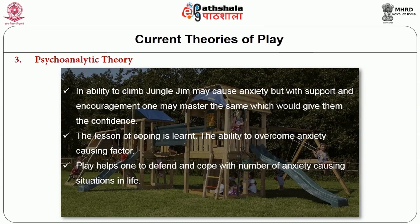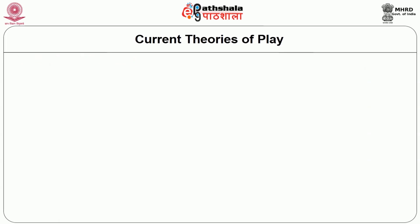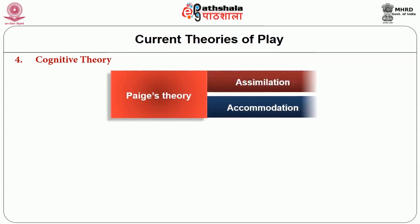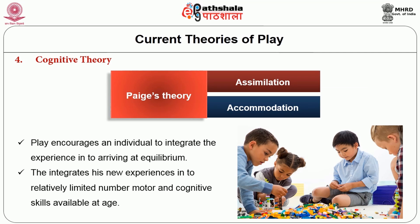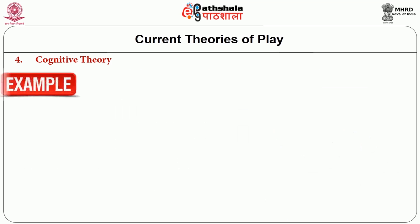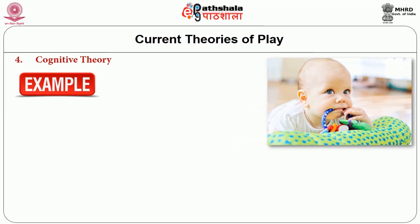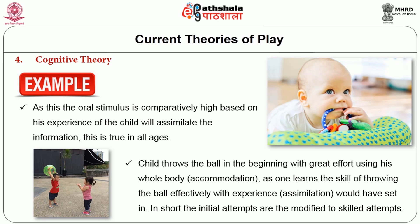Cognitive theory: The core of Piaget's theory is assimilation and accommodation. Play encourages an individual to integrate experience into arriving at equilibrium. One integrates new experiences into the relatively limited number of motor and cognitive skills available at a given age. During infancy, a baby puts everything into the mouth as the oral stimulus is comparatively high. Based on experience, the child will assimilate information, and this is true for all ages. A child throws a ball in the beginning with great effort, then learns the skill of throwing the ball effectively with experience — initial attempts are modified to skilled attempts.